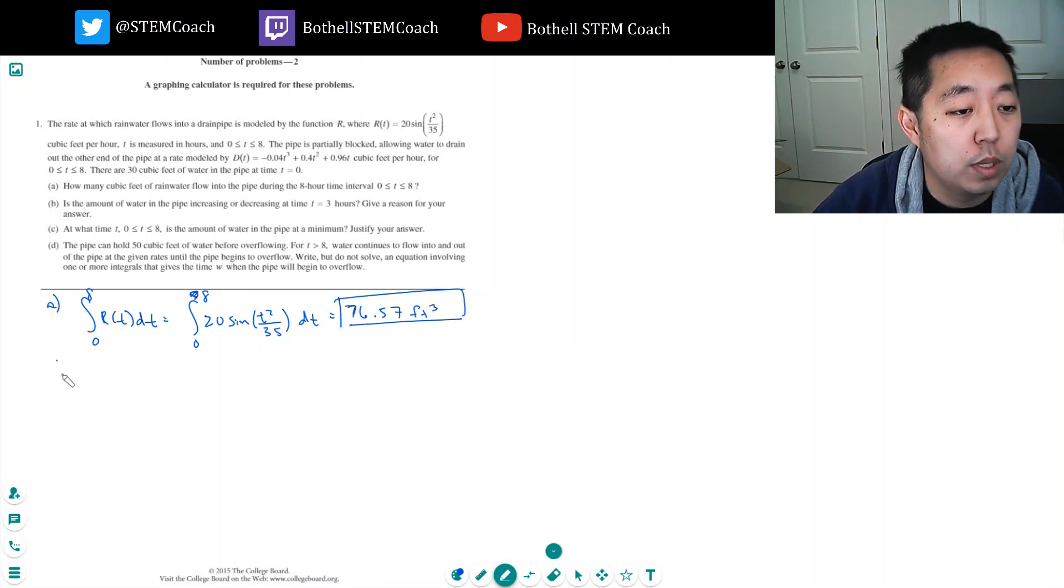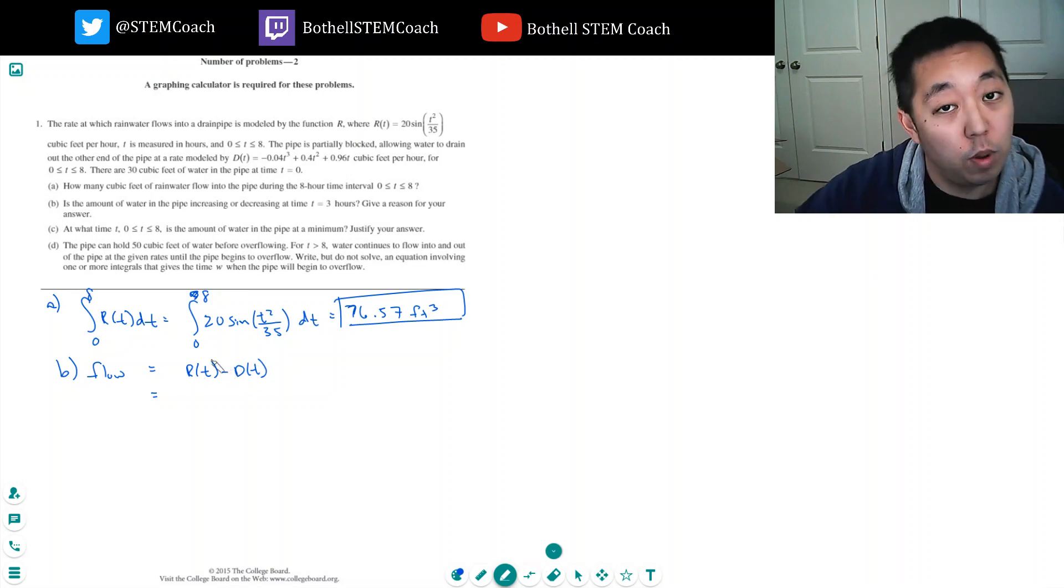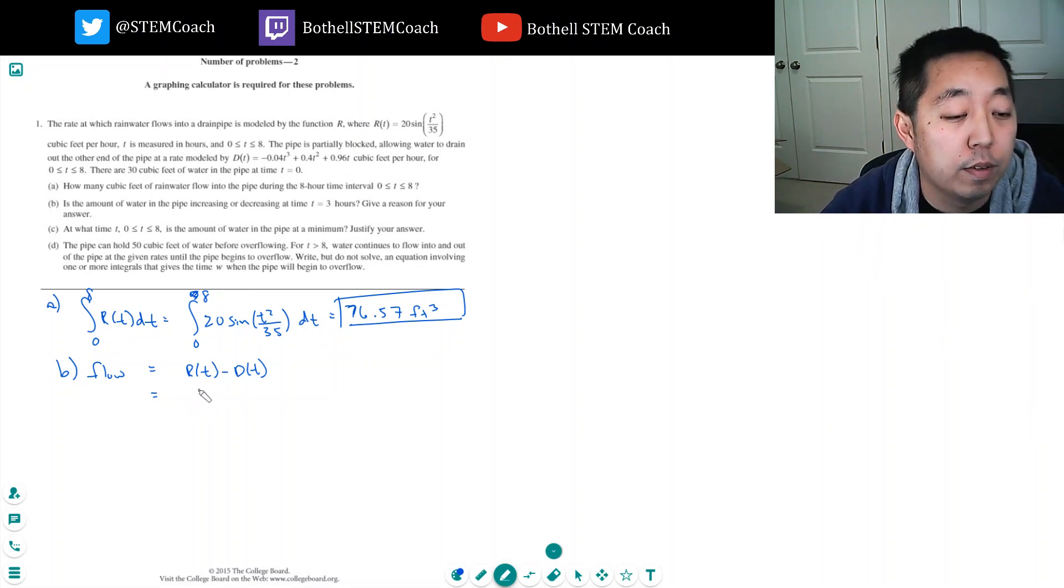Part B. That's right, it looks about right. Is the amount of water in the pipe increasing or decreasing at time T equals 3 hours? Give a reason for your answer. Well, the flow into the pipe, the flow is equal to how much is coming in minus how much is leaving, right? So R of T minus D of T. So if this is greater than 0, then more water is coming in than leaving, hence we would be increasing. And if it's less than 0, then more water is flowing out.